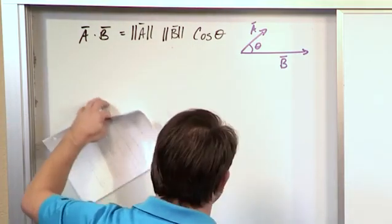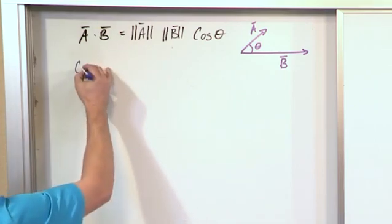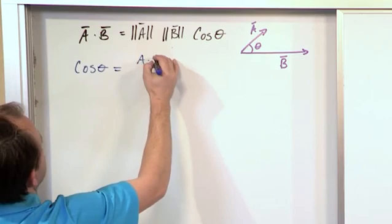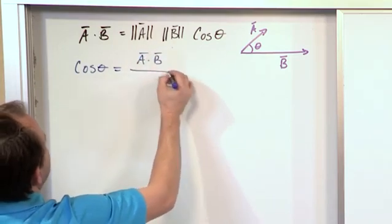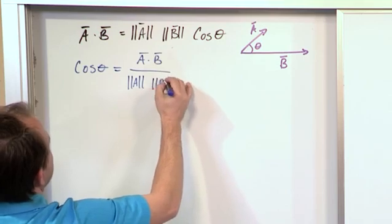But we can rearrange that, this is an equation like any other equation, and we can rearrange it. So if we rearrange it to solve for cosine of theta, then what we're going to get is A dot B, and we can divide by the magnitude of A times the magnitude of B.